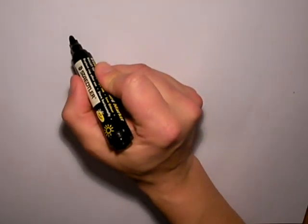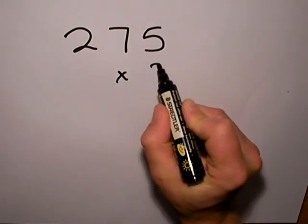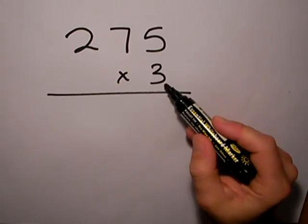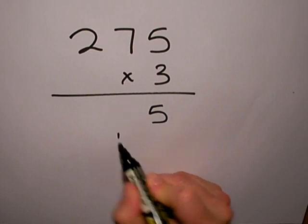My example of short multiplication methods is 275 multiplied by 3. I'll start off in the units column. I'm going to multiply 3 by 5, which is 15, so 5 down, 1 to carry.